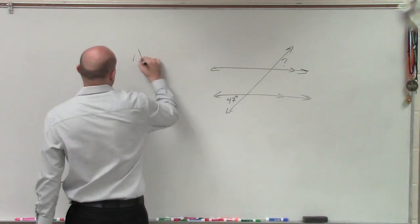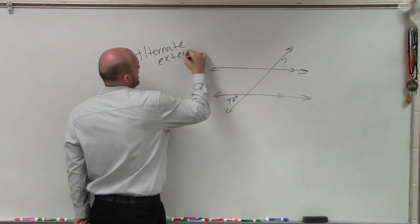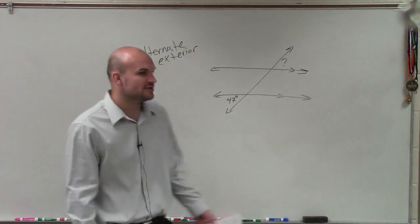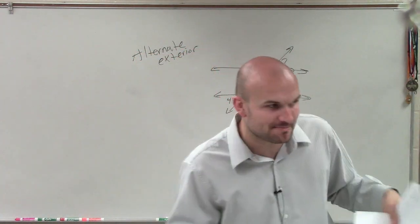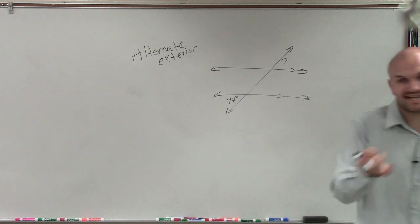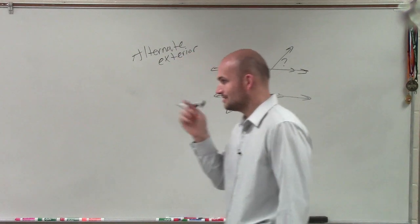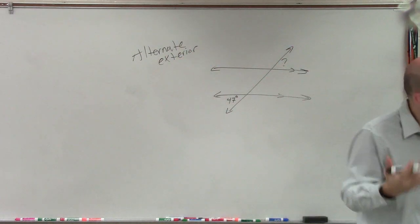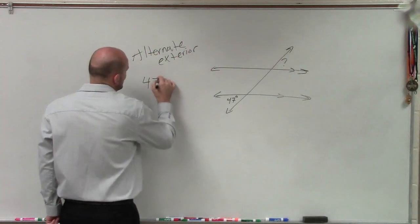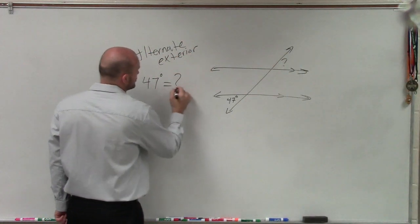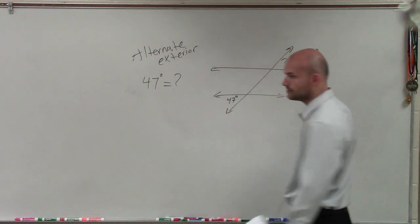Alternate exterior, very good. Now, here's what's special about alternate exterior. When we have a transversal intersecting parallel lines, how are alternate exterior angles related, Sierra? They equal each other. Very good. If you guys don't remember that, they equal each other. So therefore, we can say 47 degrees is equal to that angle with the question mark. So therefore, this is 47 degrees.